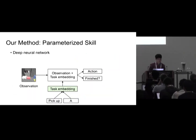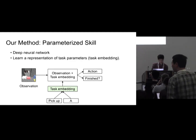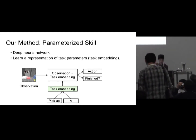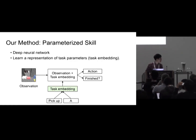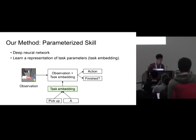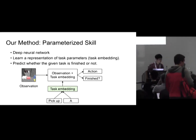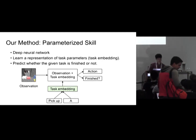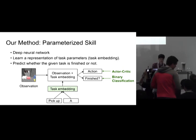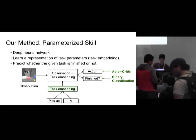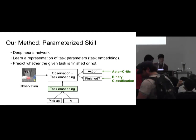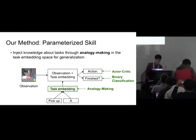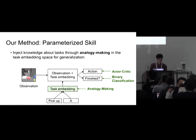To do this, we proposed an architecture called parameterized skill, which is a deep neural network. This network takes task parameters as additional input and maps them to a task embedding space. This is combined with the observation, and the architecture produces an action and a binary value which predicts whether the given task is finished or not. We train this architecture using the actor-critic objective for the action and the binary classification objective for the binary prediction. The most important component is the task embedding because it has to deal with unseen combinations of the task parameters.